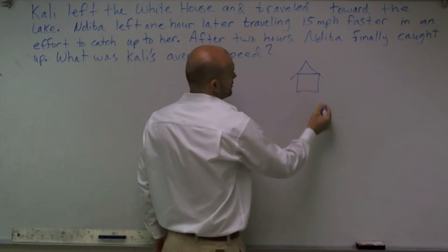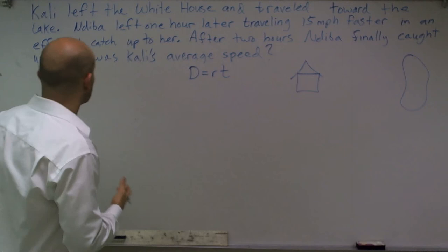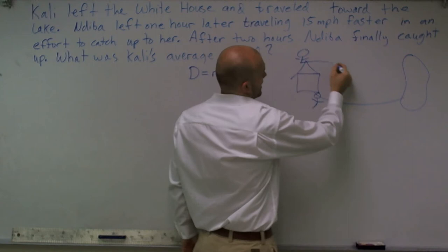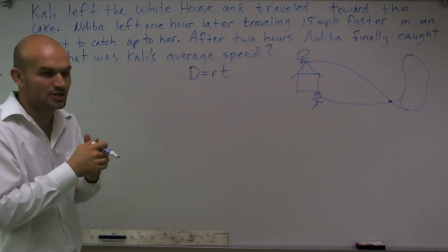So it says they left the White House. It doesn't need to be special, draw a little house. And then they went to a lake. One left an hour later. So you can represent here would be maybe Callie, and then Nadeeba leaves an hour later. And what you can see is before they get there, they intersect and meet each other up. They catch up.